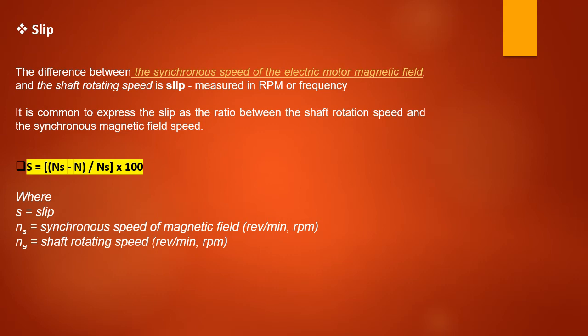Slip is the difference between the synchronous speed of the electric motor's magnetic field and the shaft rotating speed. It is measured in RPM or frequency and is commonly expressed as a ratio. The formula is: S = (Ns − N) / Ns × 100, where S is slip, Ns is the synchronous speed of the magnetic field, and N is the shaft rotating speed. Please remember this definition and formula and know how to apply it.